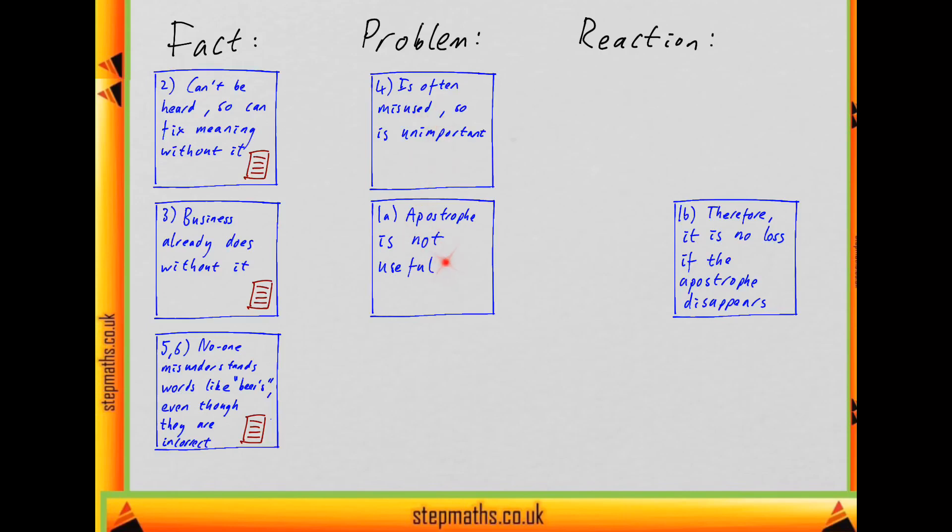This is very similar in statement, just saying the apostrophe is not useful. These facts do support that. But the way the argument is written, this part of the first sentence is immediately used to conclude this. So this is used to conclude this statement. Therefore, this can't be the main conclusion because it's used to support something else.